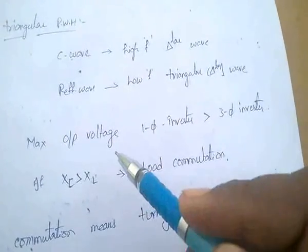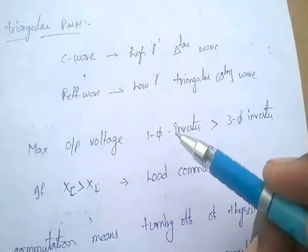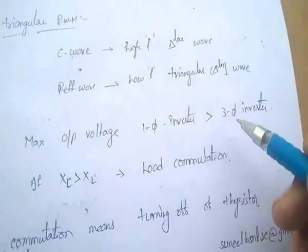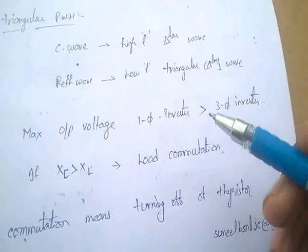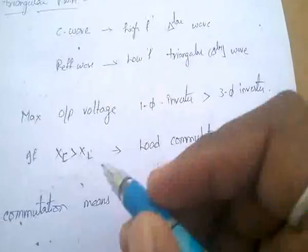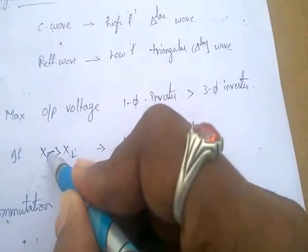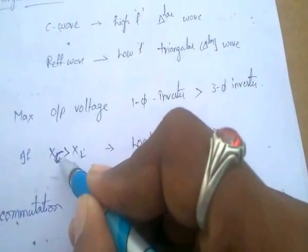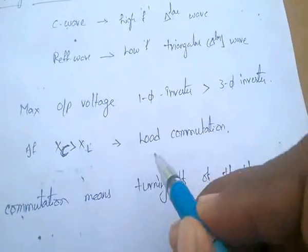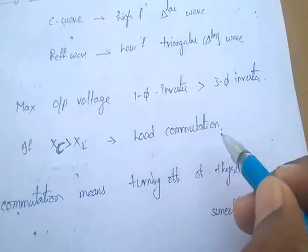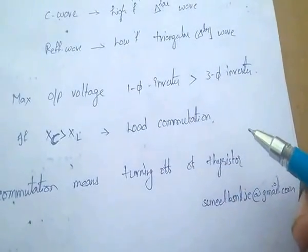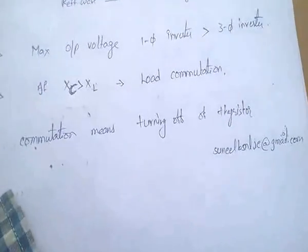The maximum output voltage for a single phase inverter is greater than that of a three phase inverter. If capacitive reactance XC is greater than XL, the commutation is load commutation. The turning off of a thyristor is called commutation.